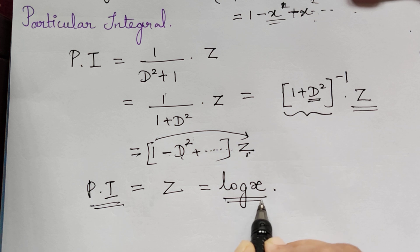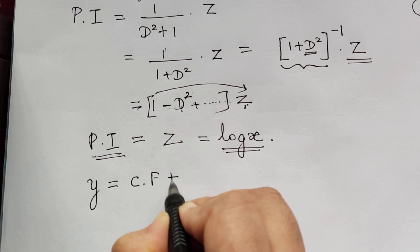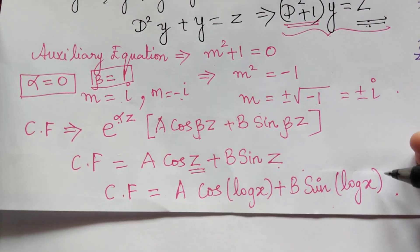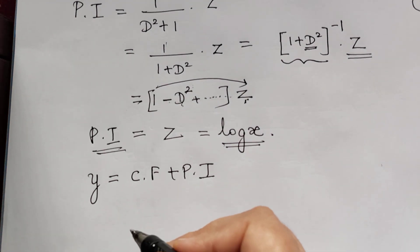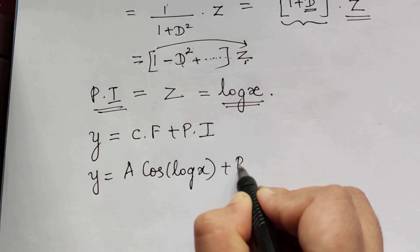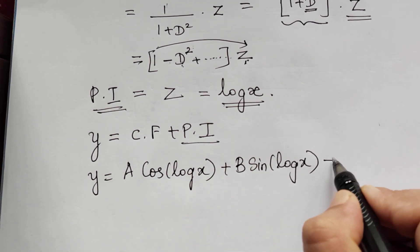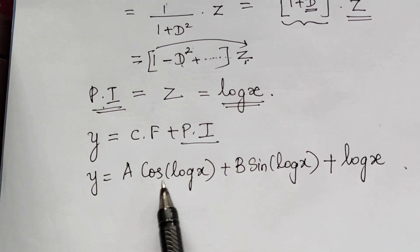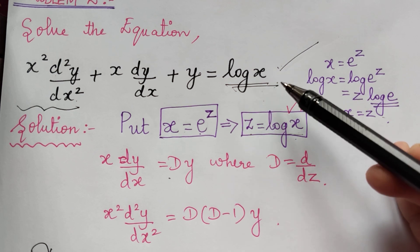The particular integral is log x. The general solution is y equals CF plus PI, so y equals A cos(log x) plus B sin(log x) plus log x. This is the general solution for the given linear differential equation with variable coefficients.